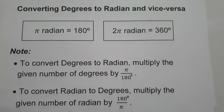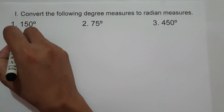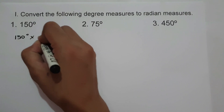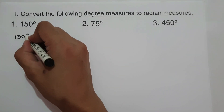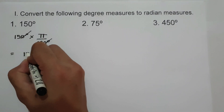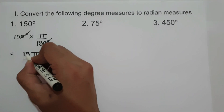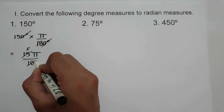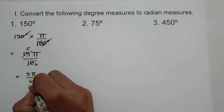Let's start with the first set of examples: converting degrees to radians. To convert degrees to radians, multiply the given degrees by pi over 180. On number 1, we have 150 degrees. So we have 150 degrees times pi over 180 degrees. Cancel the degree sign and the zero, giving us 15 pi over 18. Since 15 and 18 are divisible by 3, we get 5 pi over 6. So 150 degrees in radians is 5π/6.